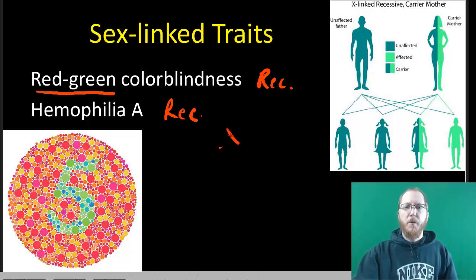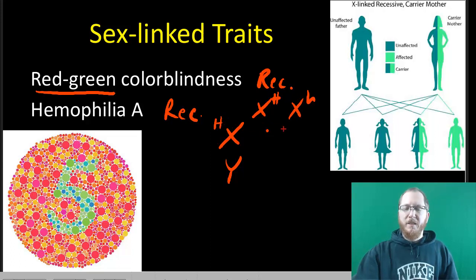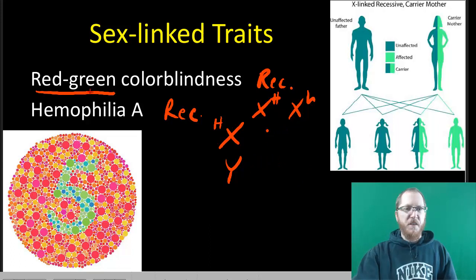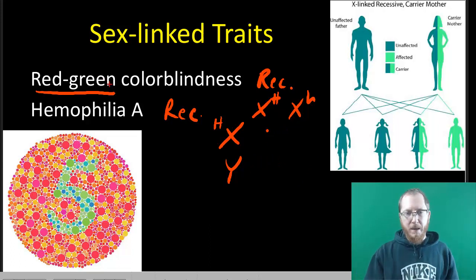So if you remember those Punnett squares, when setting it up it's entirely the mom that matters. If the dad is healthy, the boys don't get any allele coding for hemophilia, colorblindness, or any of these X-linked traits from dad.